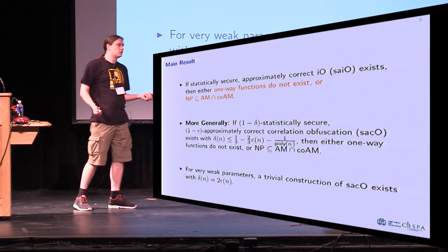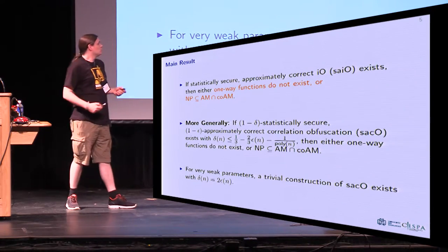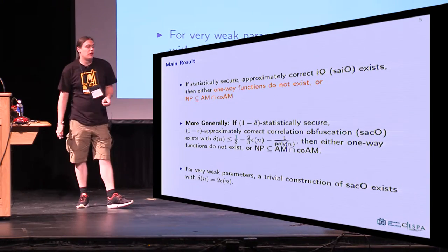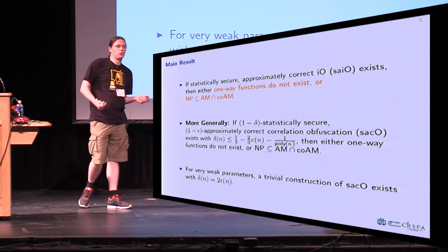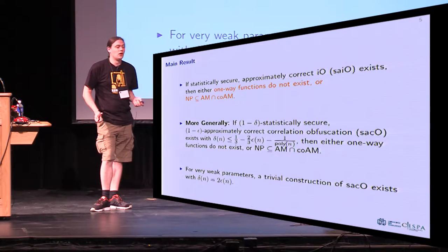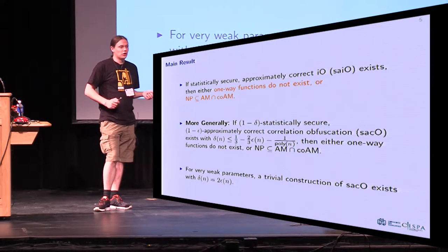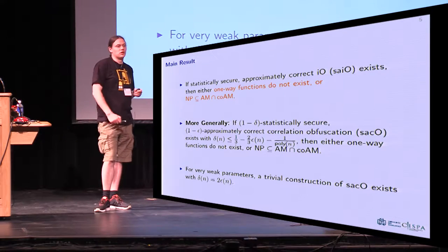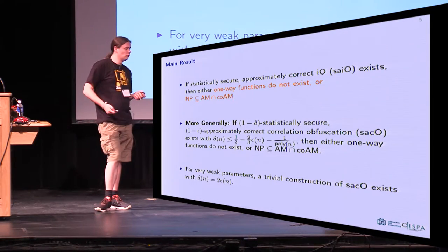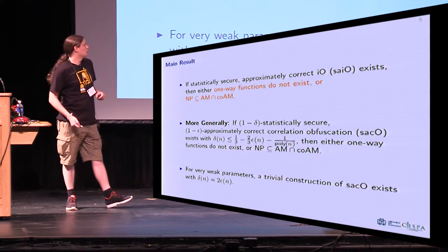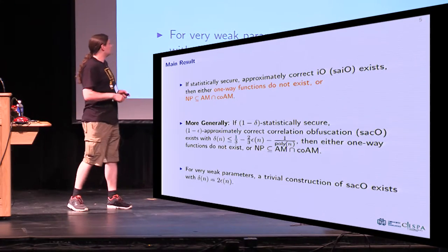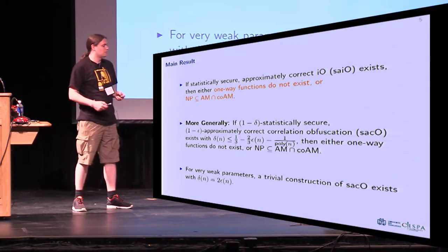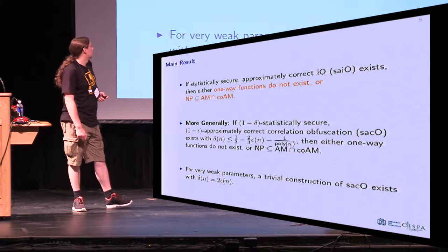Our answer to that question is mainly negative. What we show is that if a statistically secure approximately correct I.O. would exist, then either one-way functions do not exist or the polynomial hierarchy collapses. And since we do not believe that either one-way functions do not exist or the polynomial hierarchy collapses, probably statistically secure approximate I.O. does not exist. Our actual proof is more general in that it also applies to correlation obfuscation and basically gives us a lower bound on the possible parameters for statistically secure approximately correct correlation obfuscation.